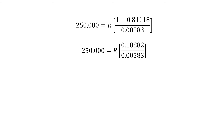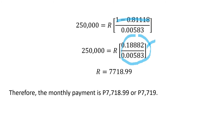By further simplifying, we divide 250,000 by the quotient of the fraction. Therefore, R equals 7,718.99. The monthly payment is P7,718 pesos and 99 centavos, or approximately P7,719 pesos.